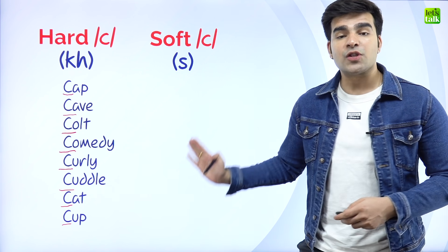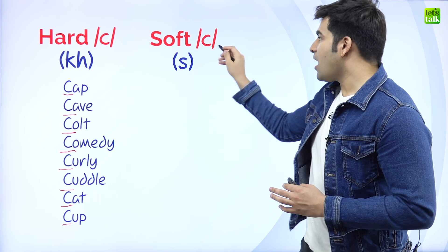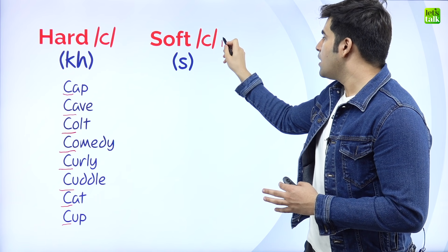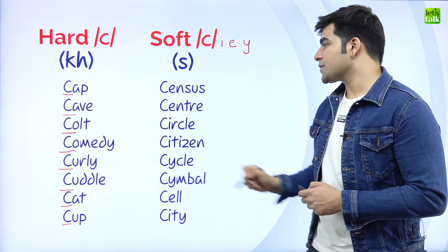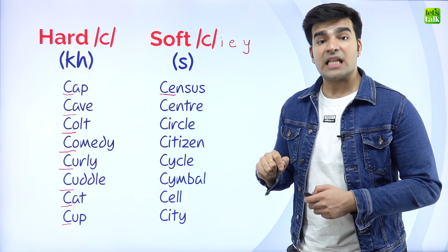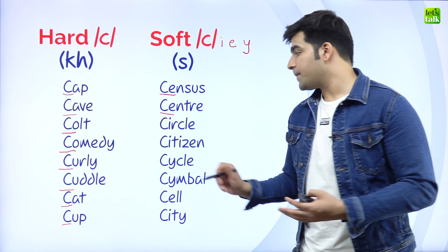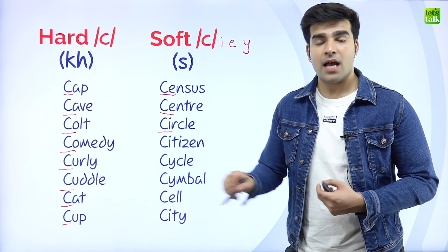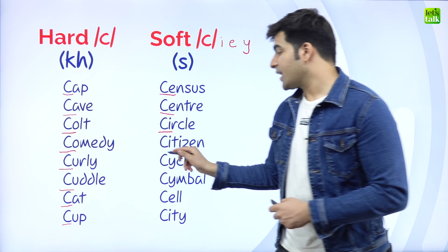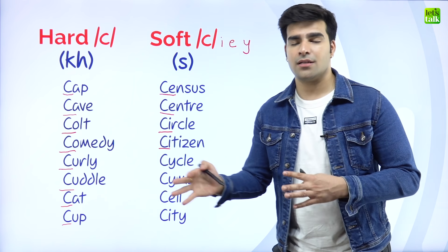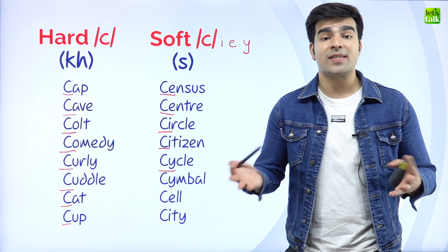Let us quickly move to the soft C sound — when it changes to S, and what are those three cases? When after C there is either I, E, or Y. Census. Centre. Circle. Make a circle. Citizen — not citizen, it is citizen. Cycle. I liked your cycle.